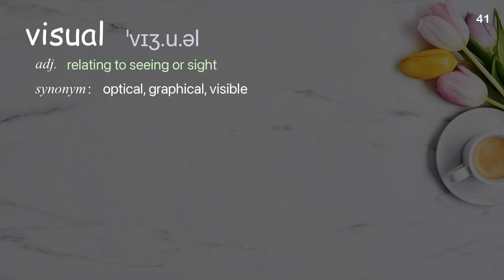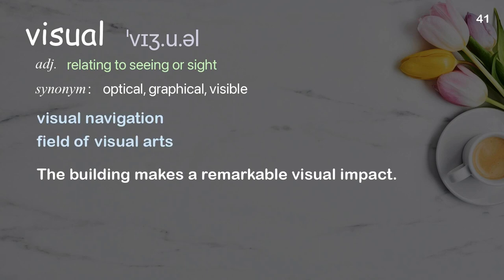Visual: relating to seeing or sight. Examples: visual navigation, field of visual arts. The building makes a remarkable visual impact.